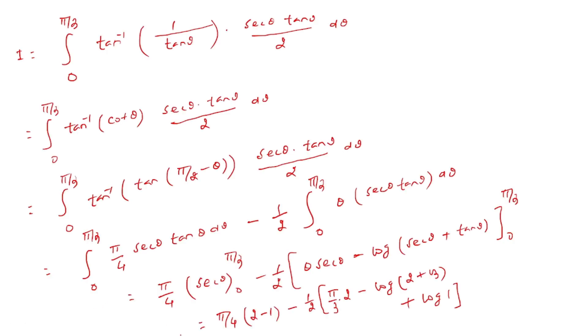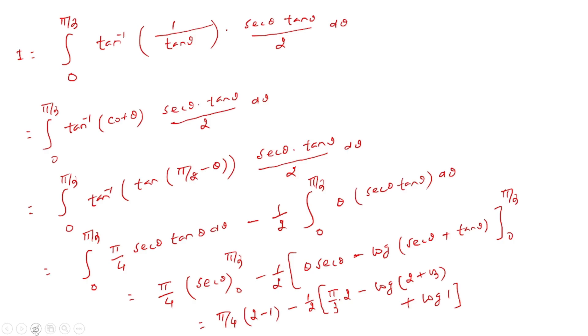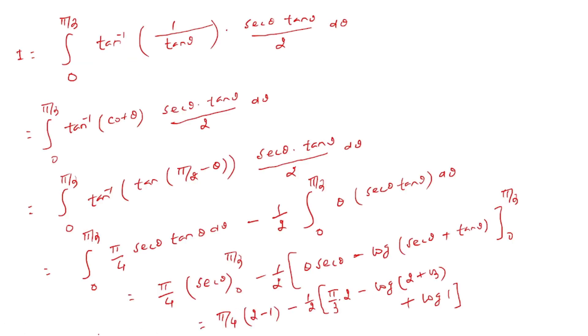We can write I as π/4 times (2-1) minus 1/2 times [π/3 times 2 - log(2 + √3)] which simplifies to 1/2 log(2 + √3) - π/12 + 1/2 log(2 + √3).